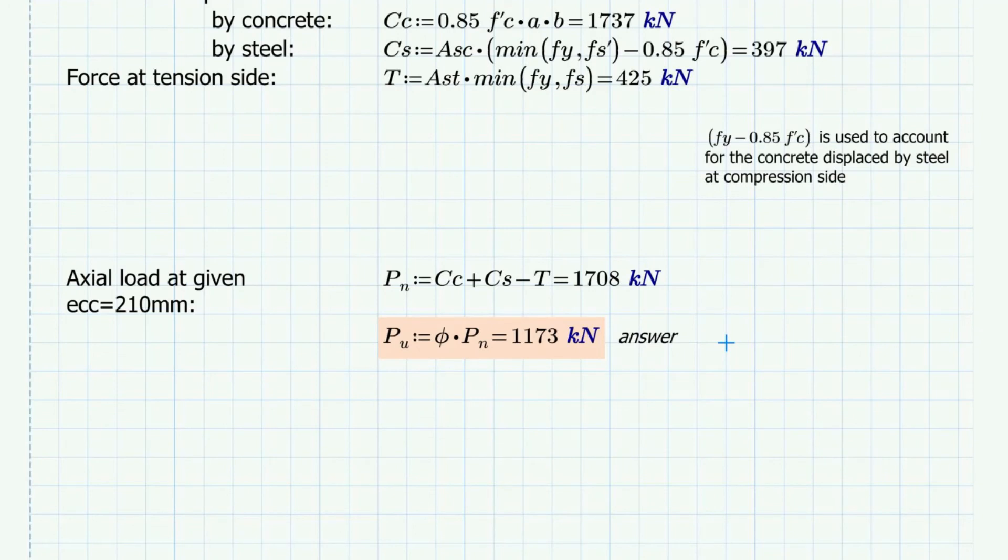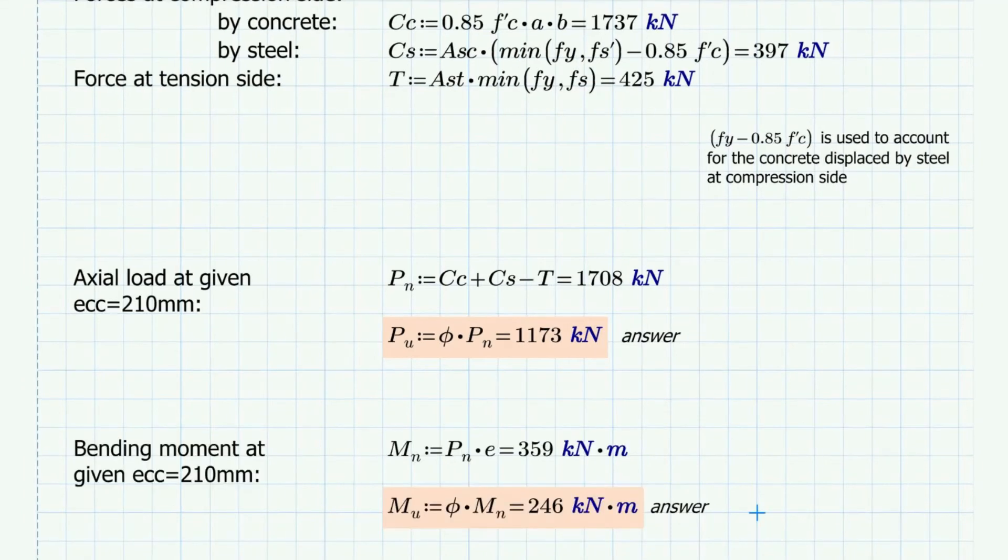So the ultimate axial load capacity at given eccentricity 210 mm is equal to 1173 kN. And the ultimate bending moment at the given eccentricity is equal to 246 kN-m.